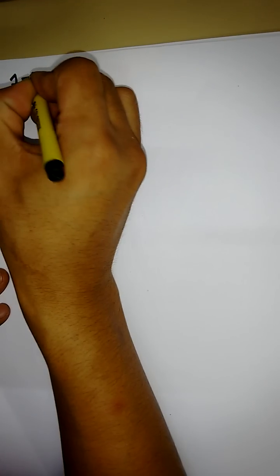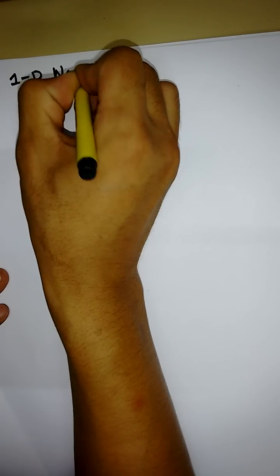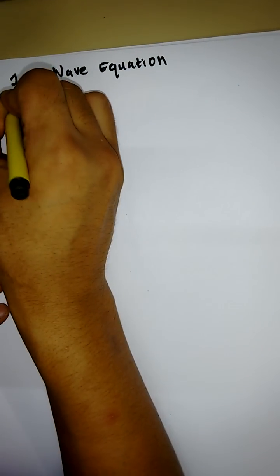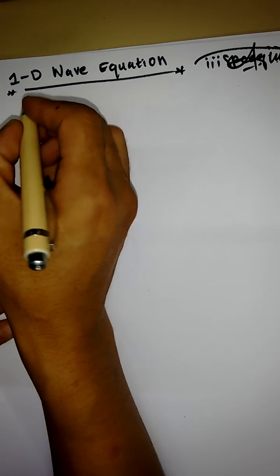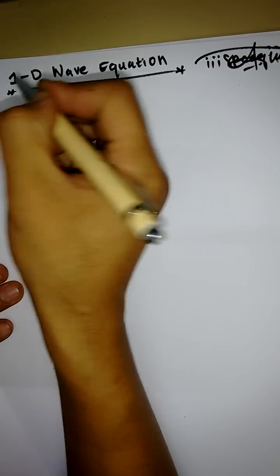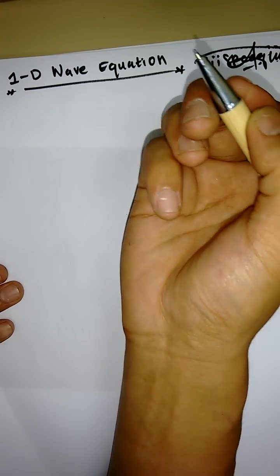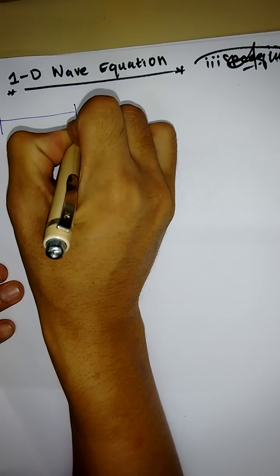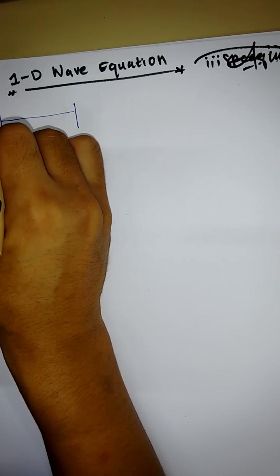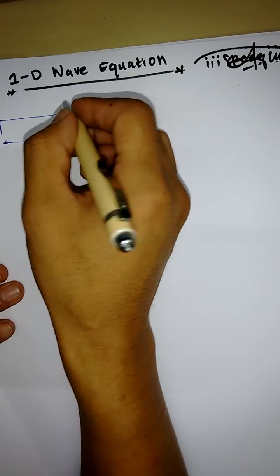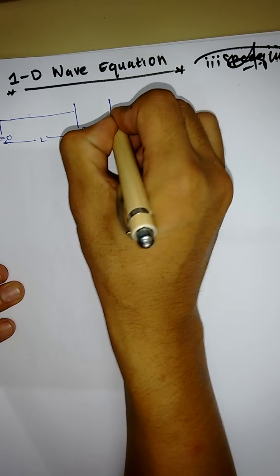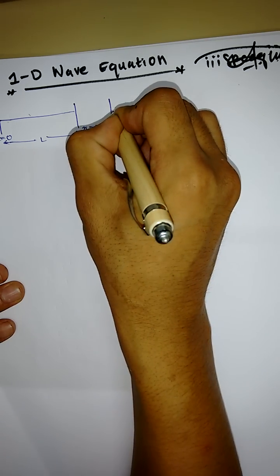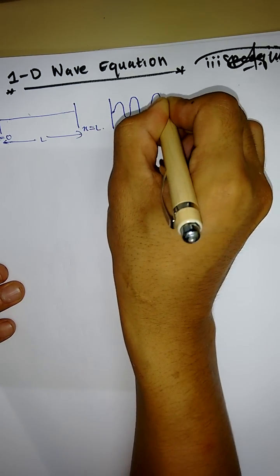Today we are going to study the one-dimensional wave equation. In this problem we take a boundary value problem which models the wave phenomenon: a vibrating elastic string of length L, fastened at both ends on the x-axis at x = 0 and x = L. The string is then displaced and released to vibrate in the x-t plane.